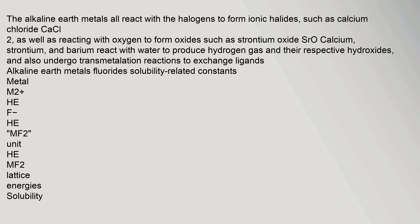The alkaline earth metals all react with the halogens to form ionic halides, such as calcium chloride (CaCl₂), as well as reacting with oxygen to form oxides such as strontium oxide (SrO). Calcium, strontium, and barium react with water to produce hydrogen gas and their respective hydroxides, and also undergo transmetallation reactions to exchange ligands.